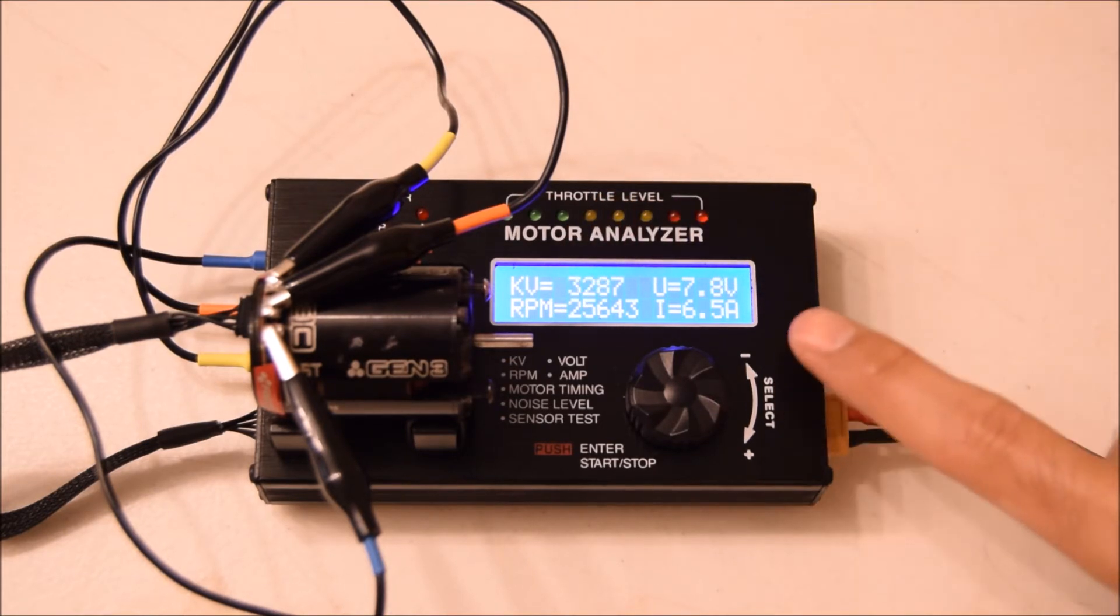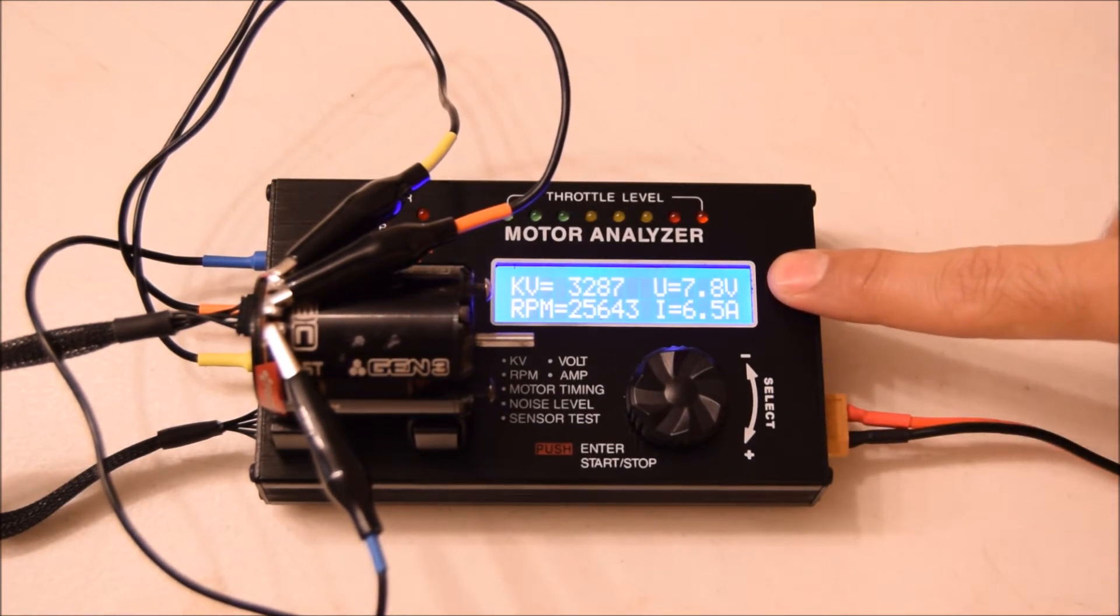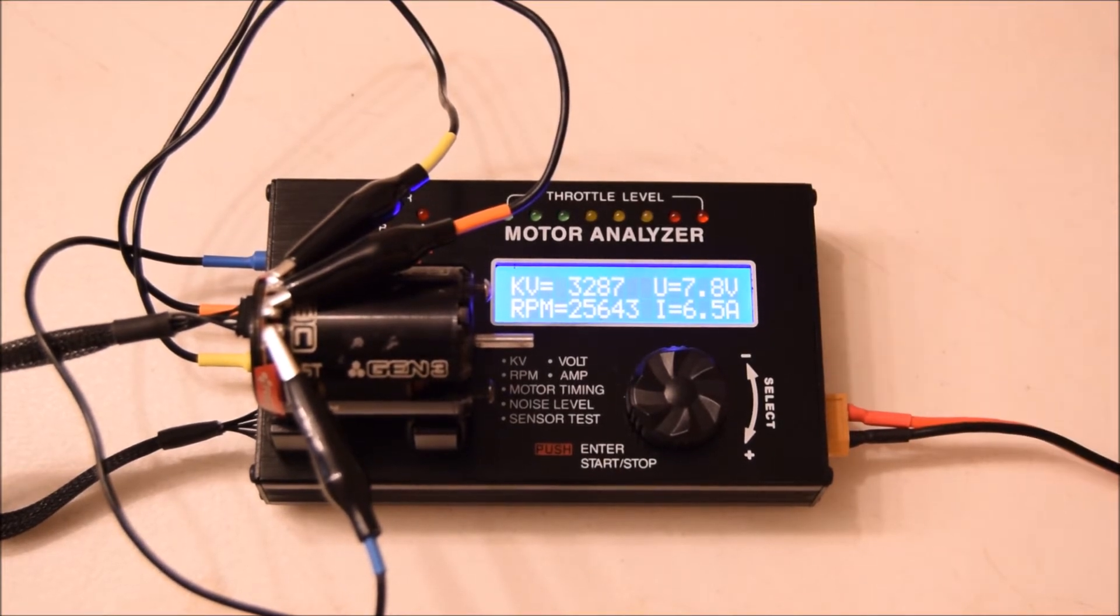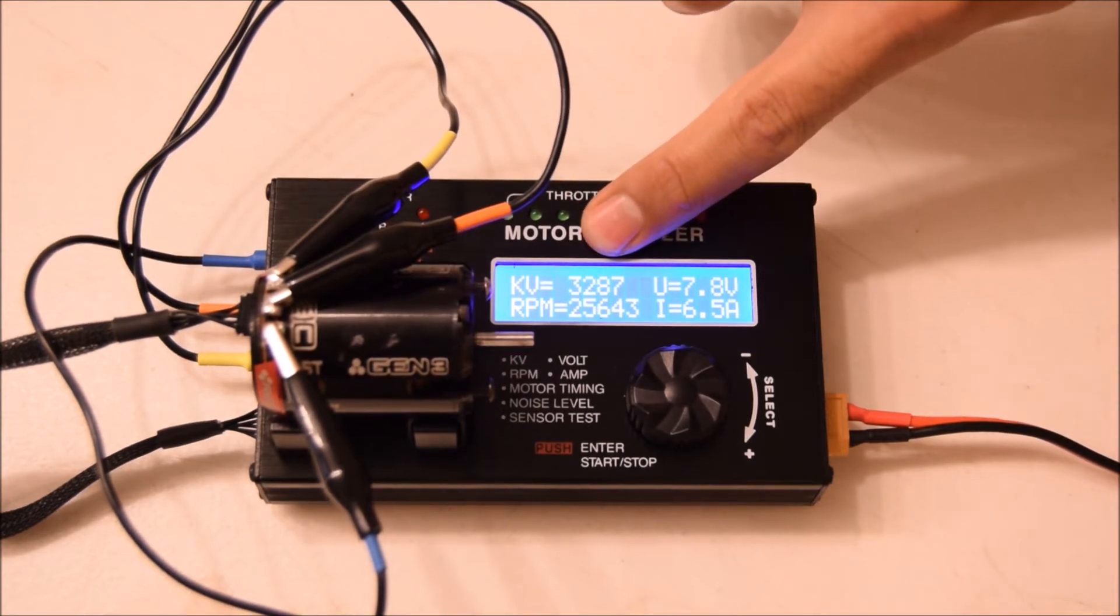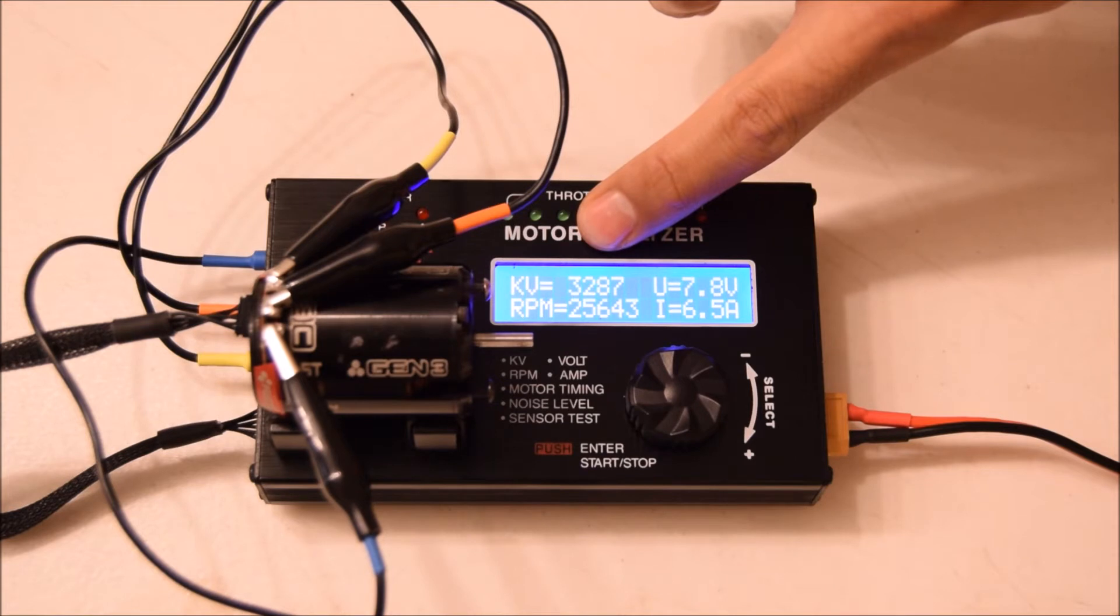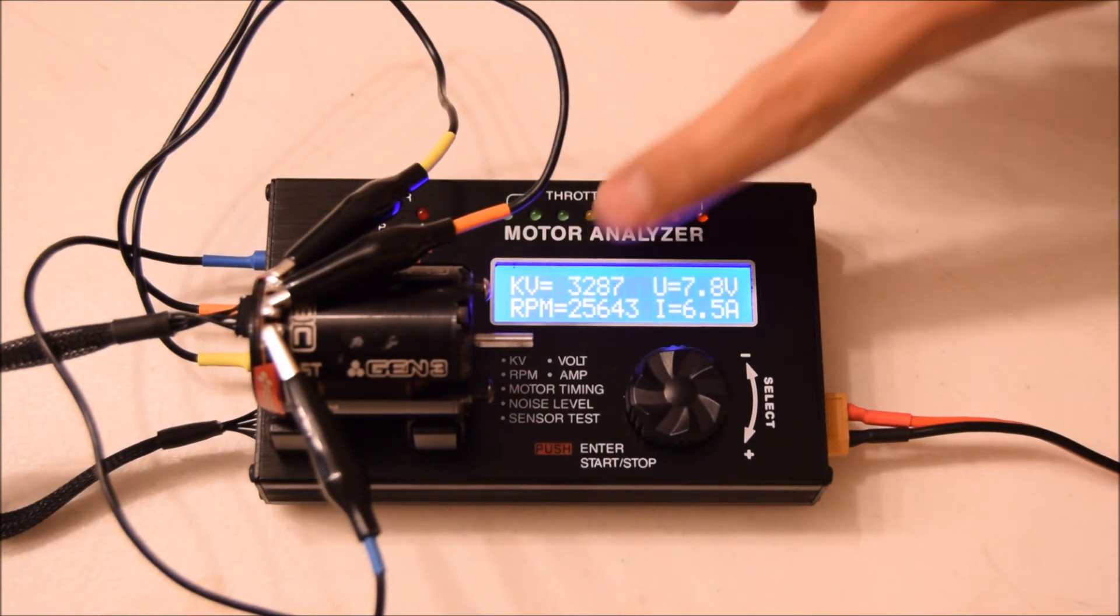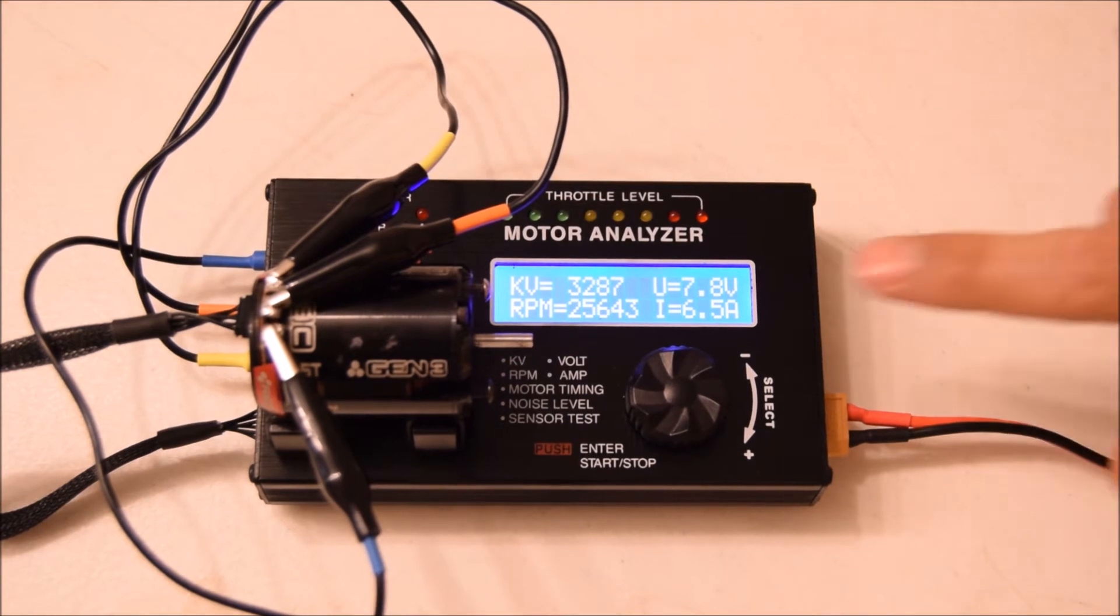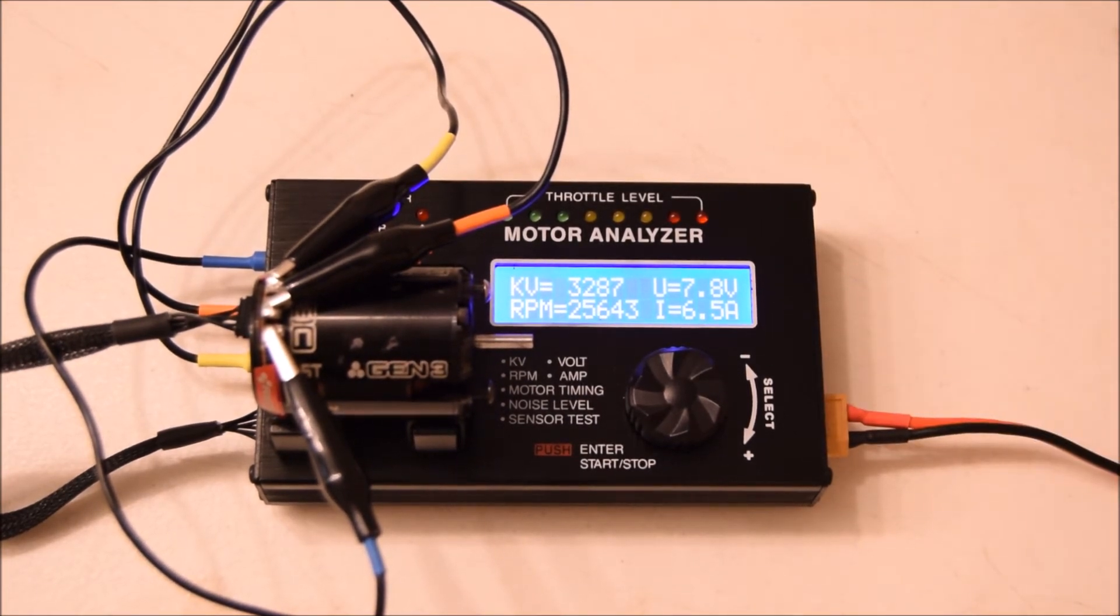The battery should always be at about 8 volts—never over, a little under is okay when performing these tests. The KV of this motor is about 3300, just under, at 25,500 RPM.